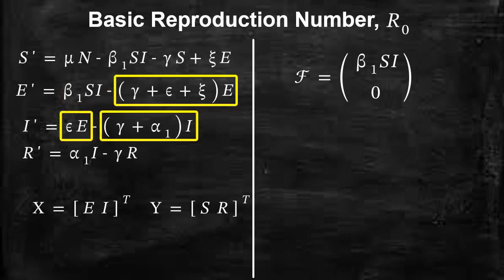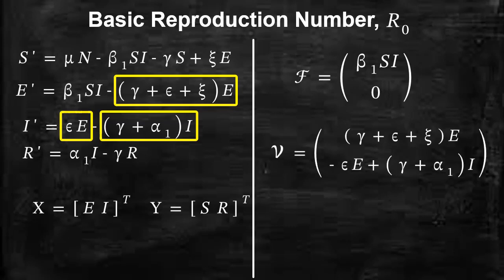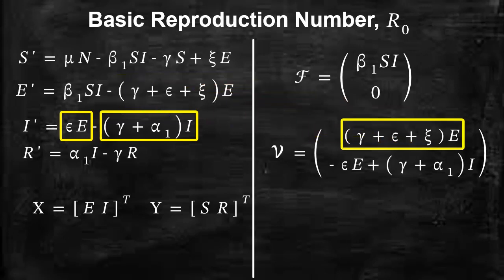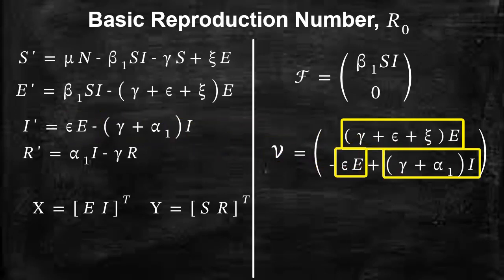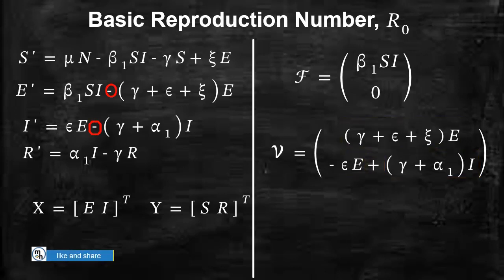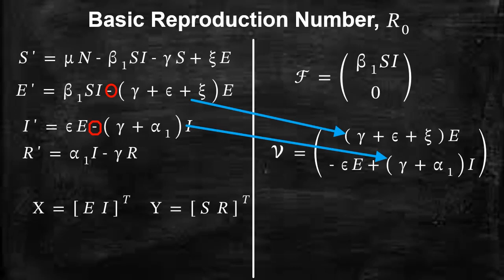Technically we call them rates which transfer infection from one compartment to another. The vector V will comprise (γ + ε + χ)E and related terms. For the rates which go out of the compartment, we take them as positive, and the rates which enter the compartment we take as negative.